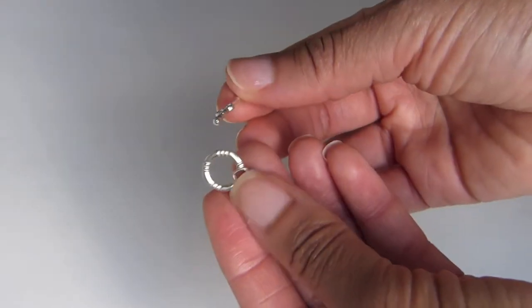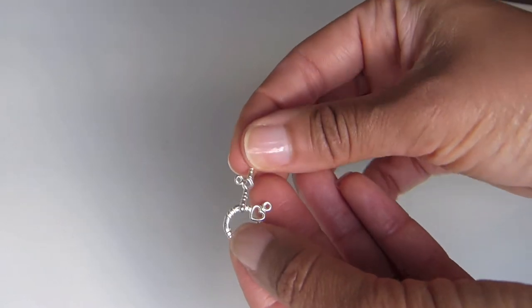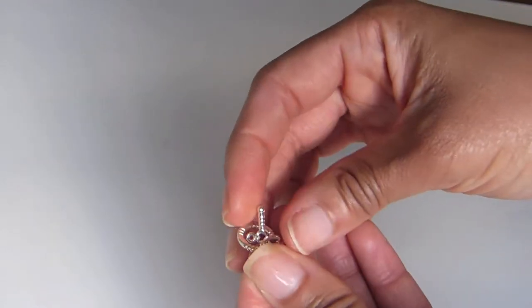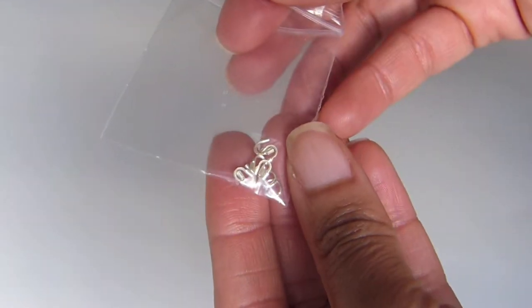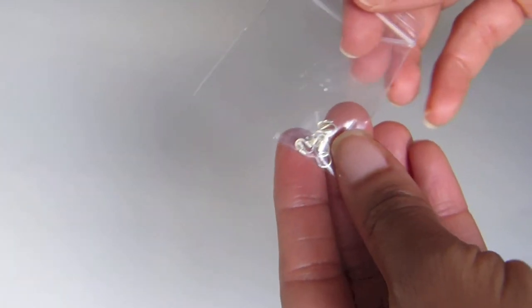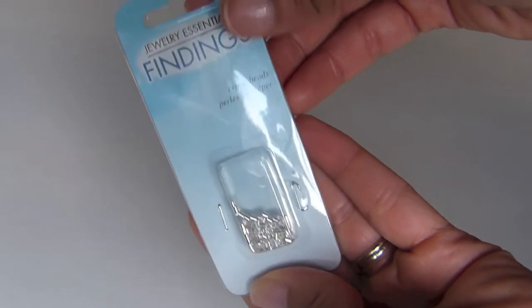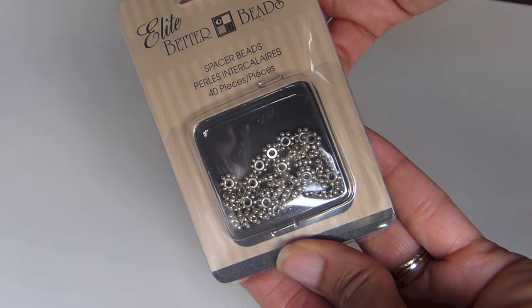You need closures. This particular one is fancy with a heart embellishment on one side. You're going to need wire protectors to protect your wire over the long term, and crimp beads to stop the beads from moving.